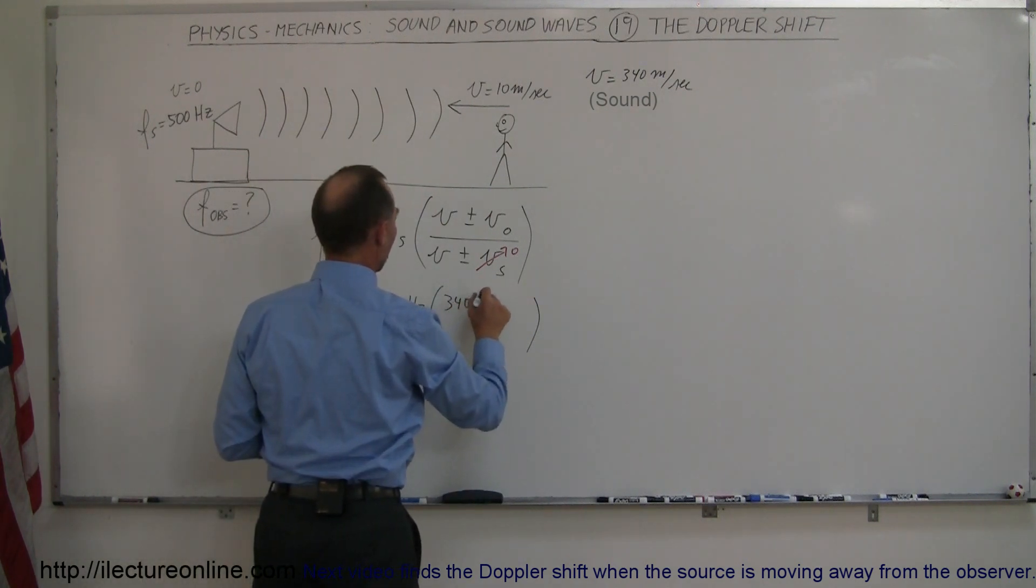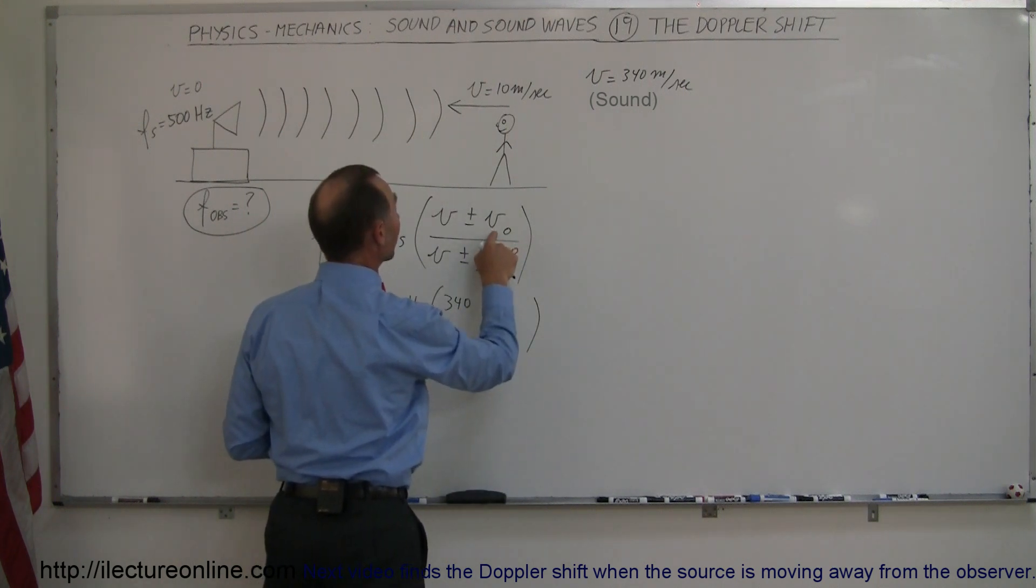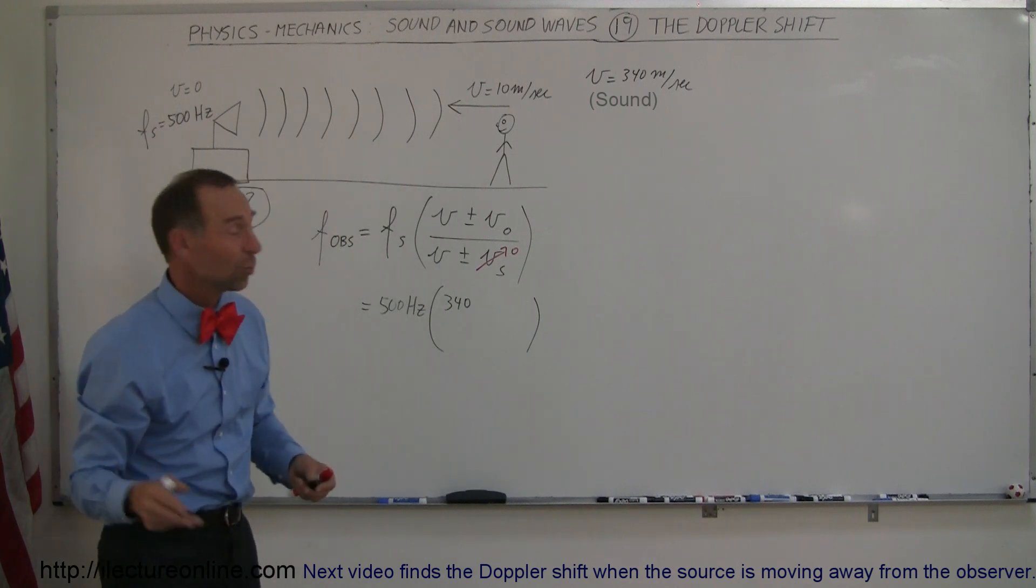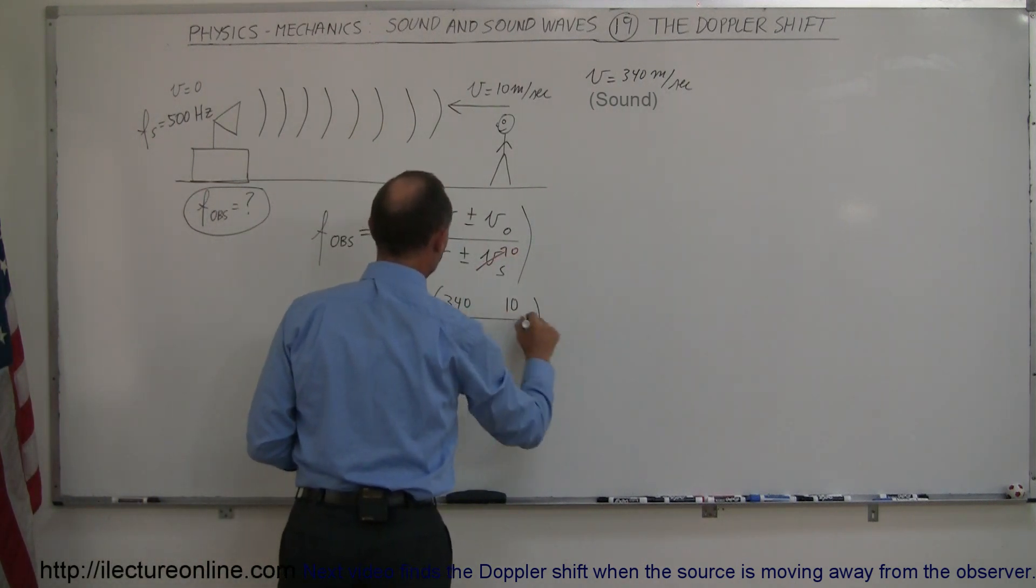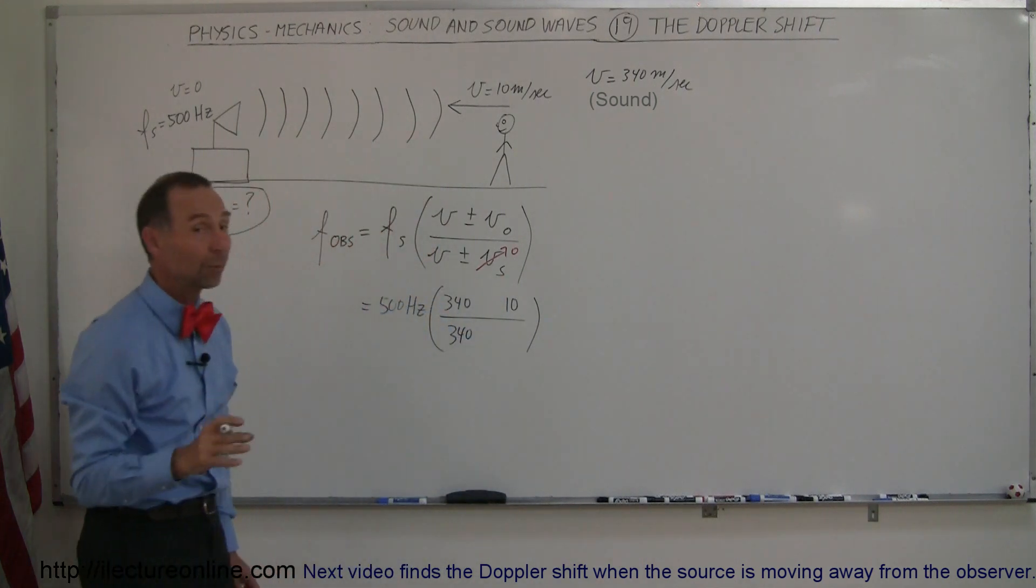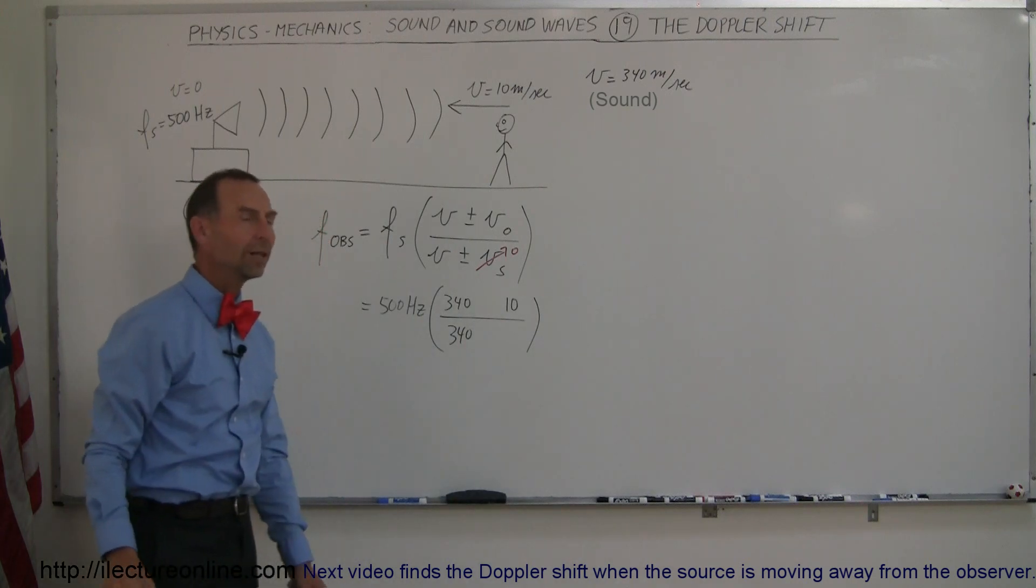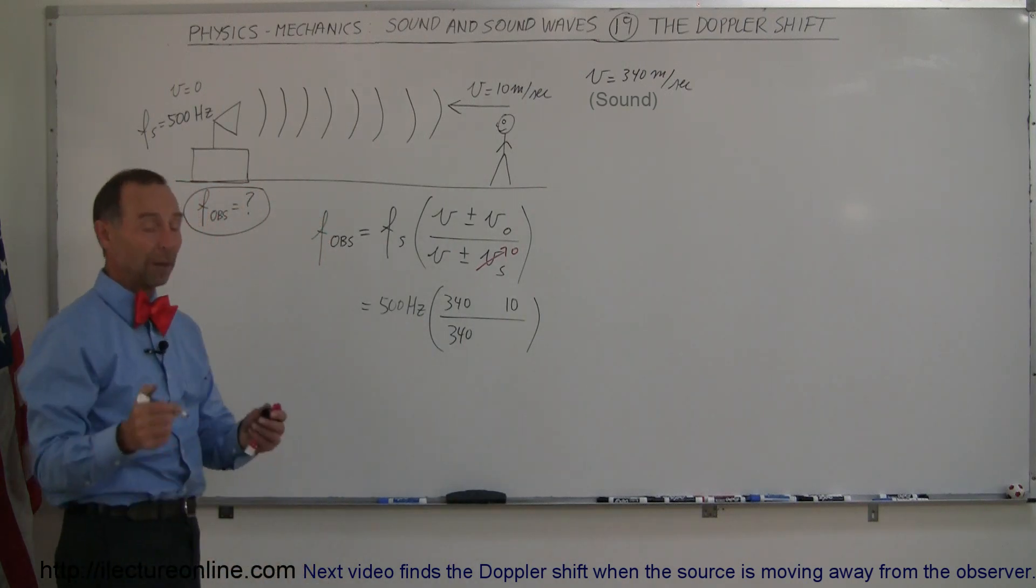So we have 340 plus or minus, I'll just leave that right now like that, 340 plus or minus the velocity of the observer. Regardless which direction he's walking, just put the number down. 10 divided by 340 and that's zero. Okay, now the big question is, is this going to be a plus or is this going to be a minus? Well, it depends upon what you're expecting to hear.